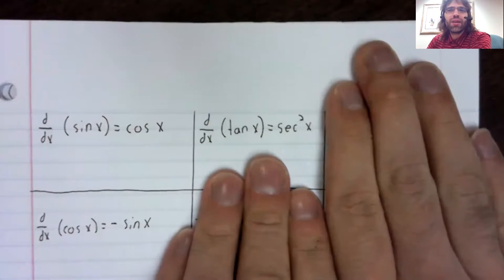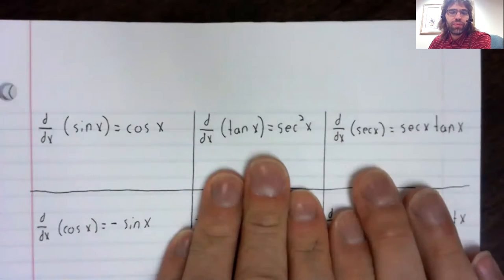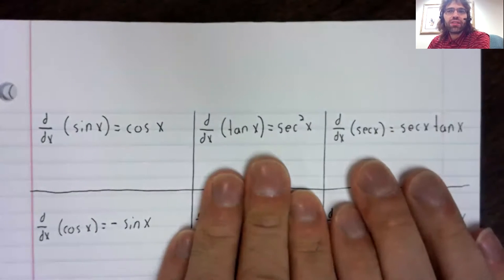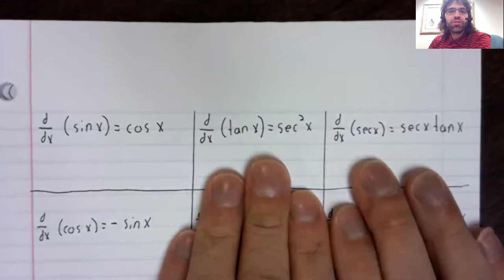And then if you have secant and take its derivative, you don't get cosecants and cotangents, you just have secants and tangents.